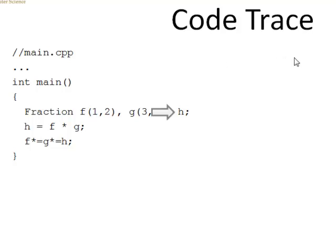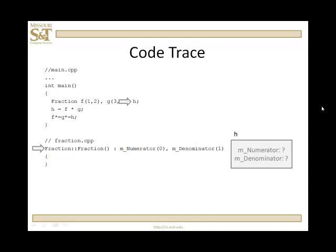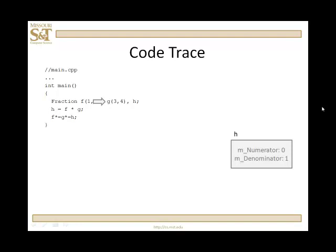We're going to create h. Since h has no arguments passed to it, that means it's going to call the default constructor. What happens? Numerator is set to zero, denominator is set to one, and we have completed the construction.